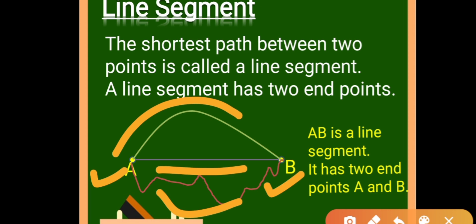Which is the shortest distance between point A and point B? Yes, the straight path is the shortest distance. This shortest path between two points is called a line segment. A line segment has two endpoints. Here, AB is a line segment and it has two endpoints — point A and point B.